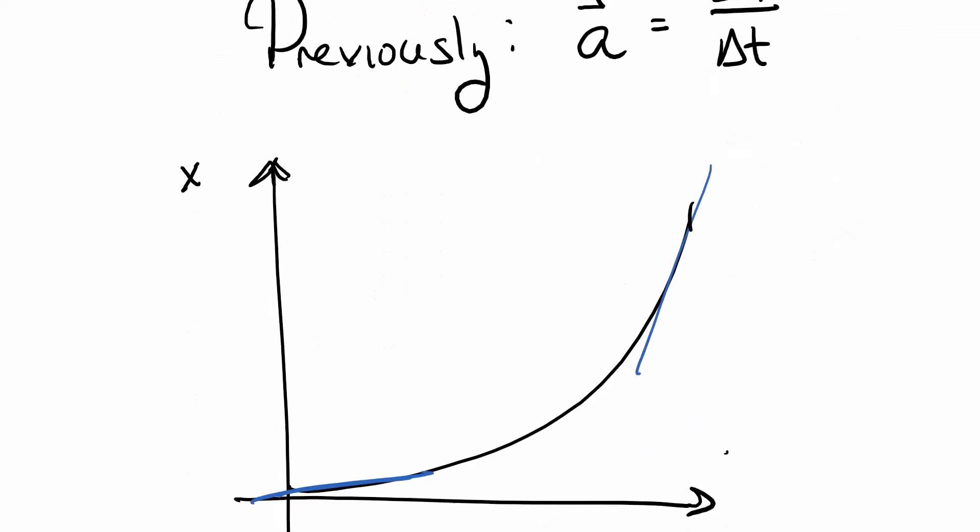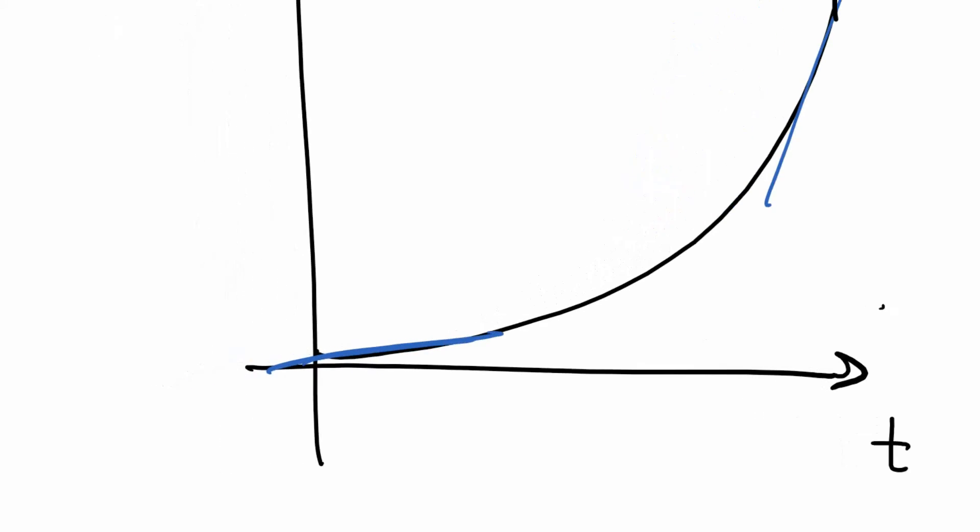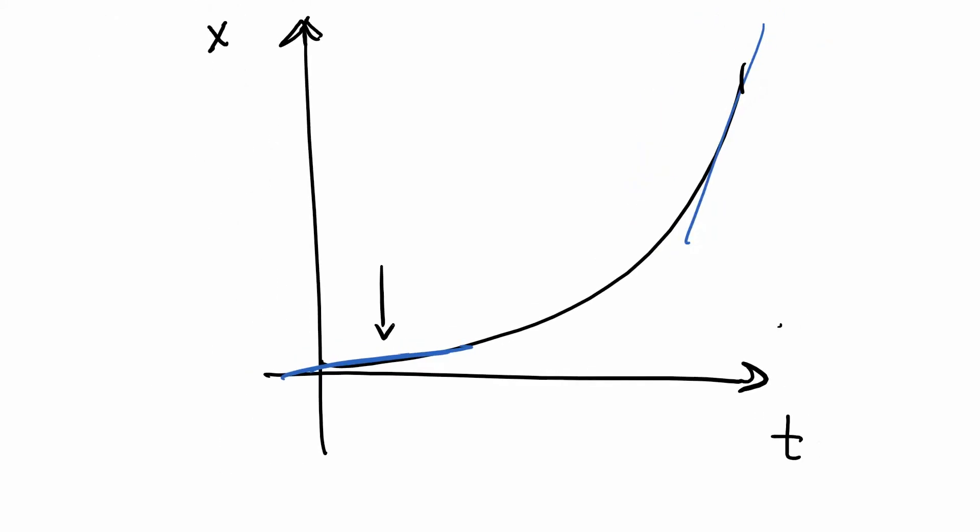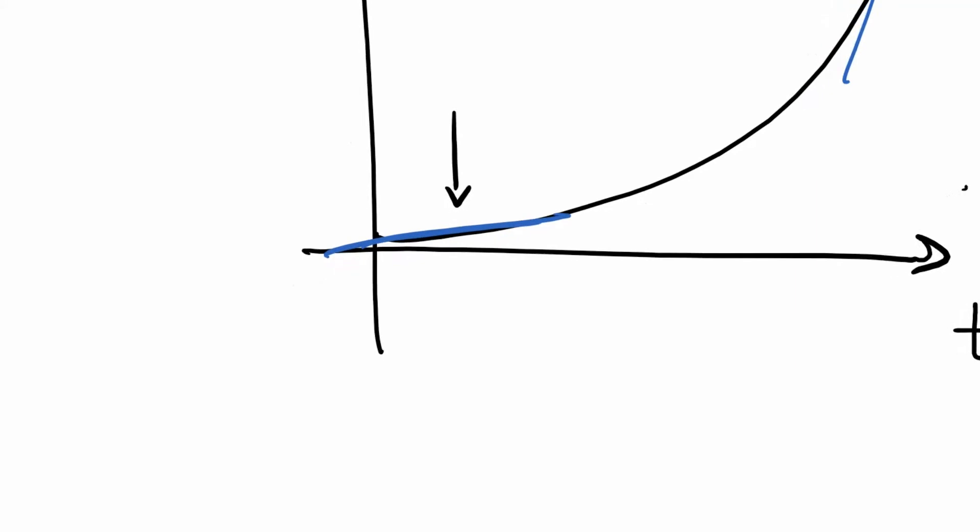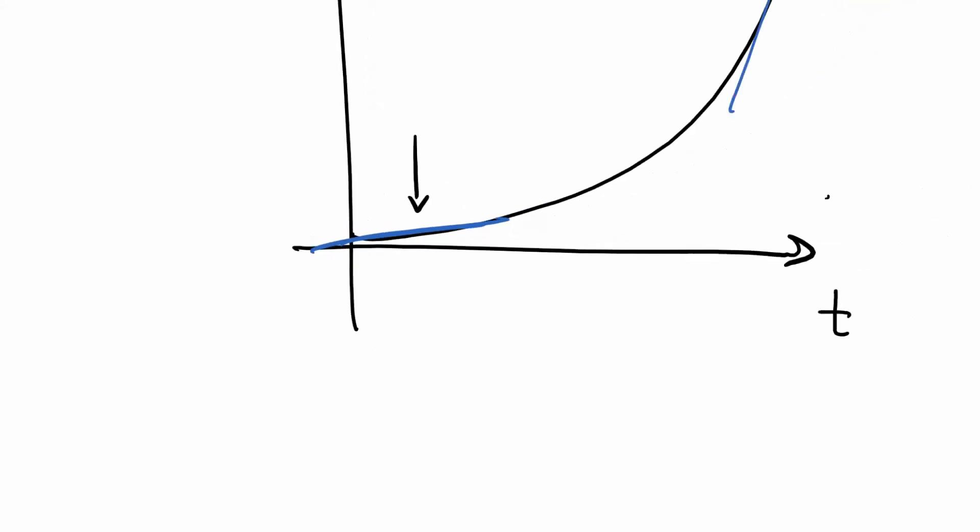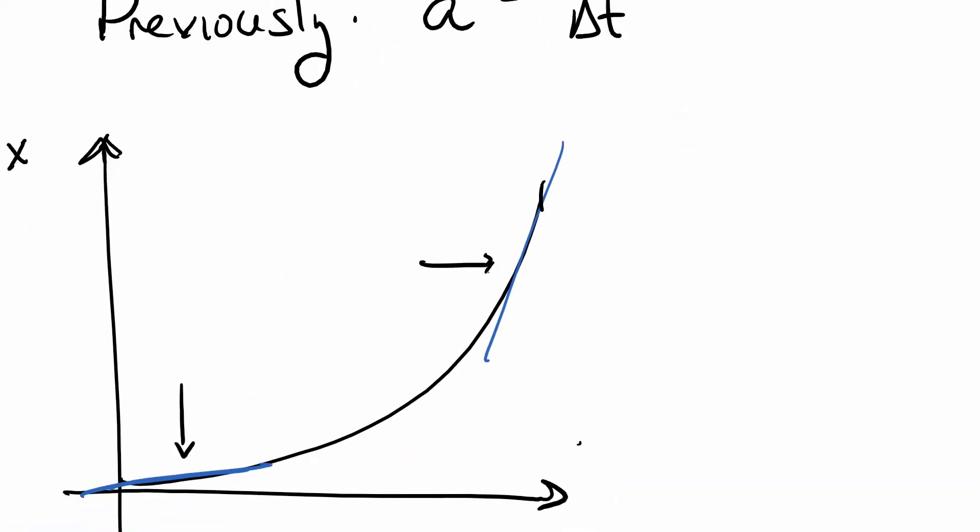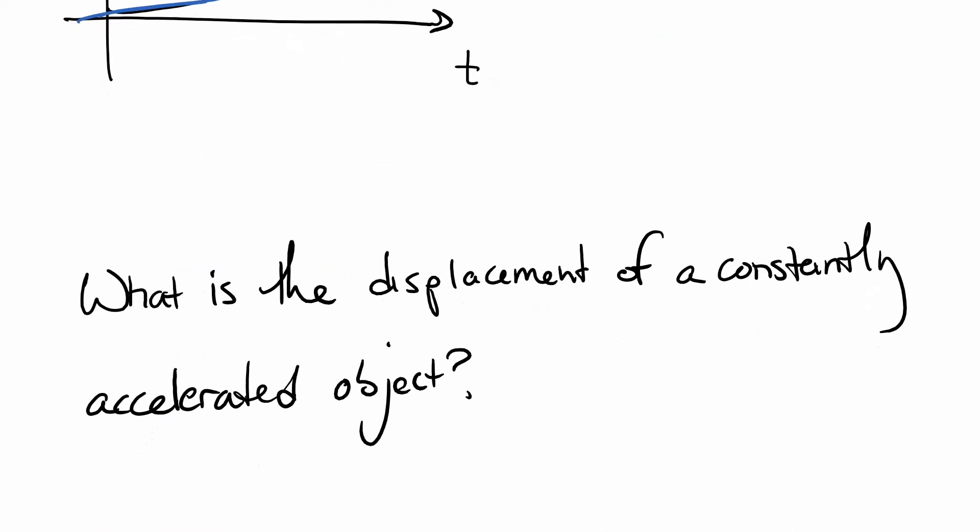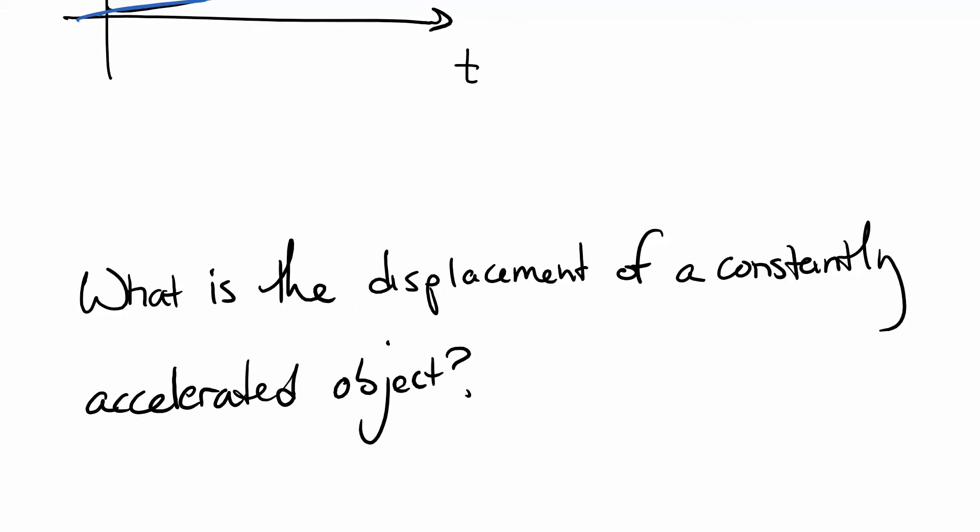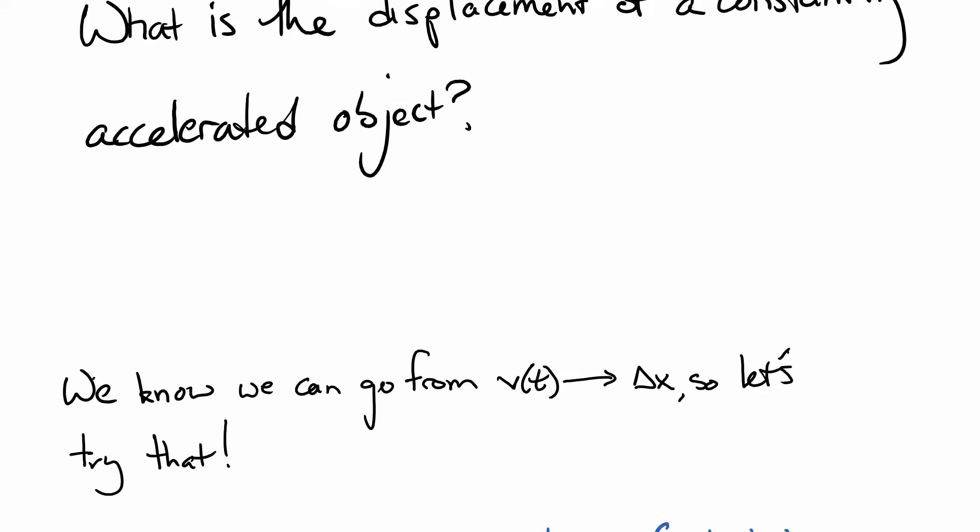We talked about what we expect this to look like. We had said that if we have a position curve, we expect it to be a curve actually, because down here we can see we have one velocity. If we zoom in super far, we can get a kind of tangent line. The slope of this line looks flat, whereas if we come over here at the tail end of it, the slope of this line looks pretty steep for some little chunk of it. So we can ask the kind of question, what is the displacement of a constantly accelerated object? When it was moving at constant velocity, we knew that the displacement looked like the velocity times the time. And so we know that we can kind of go from a velocity to a displacement, so let's see what we can do here.